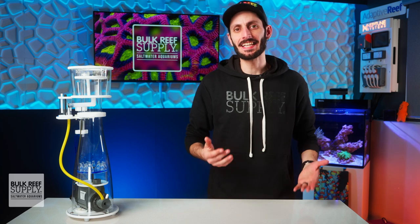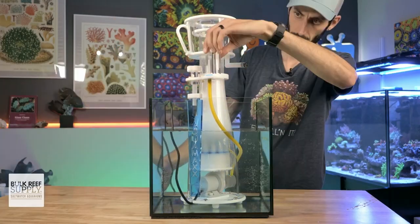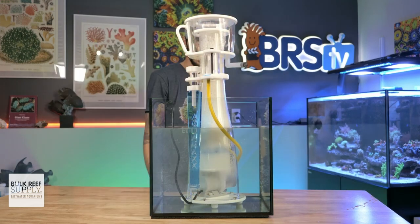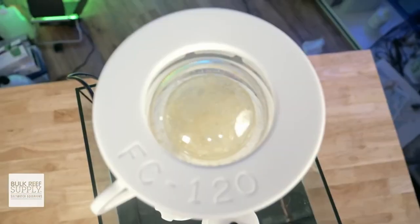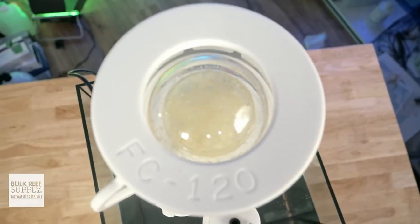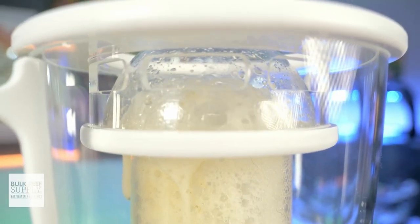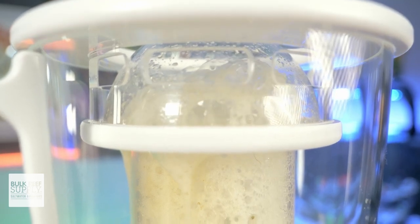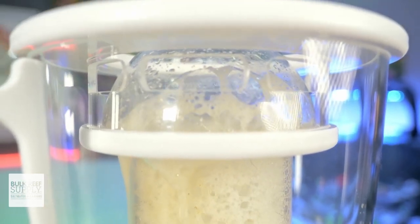Once your skimmer's dialed in and hauling out that nasty skimmate, it will rise up the neck and then hit the clear dome lid of the collection cup. The dome shape helps to guide the foam into the cup, while also giving you a great view of the foam itself from above. The vents of the lid are large, but they're facing inwards towards the dome instead of upwards with ample clearance, which should help prevent a full cup from having that grunky foam pop up through the lid and then down the sides of the skimmer.